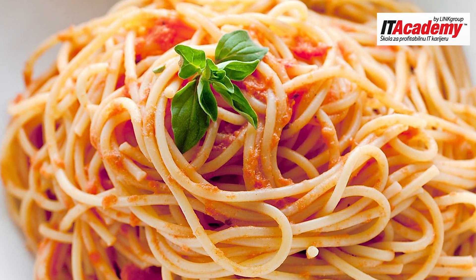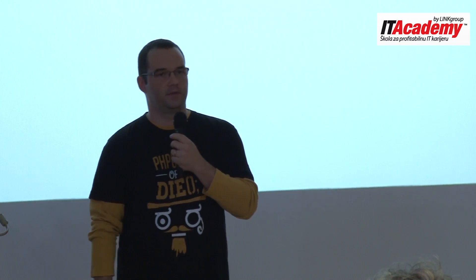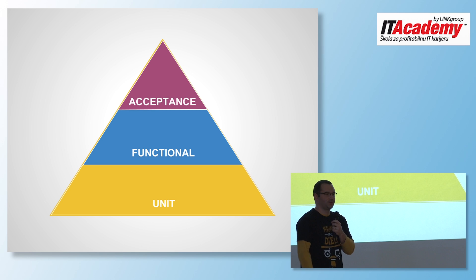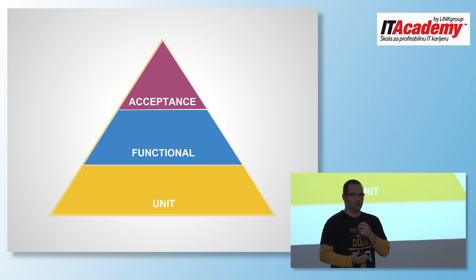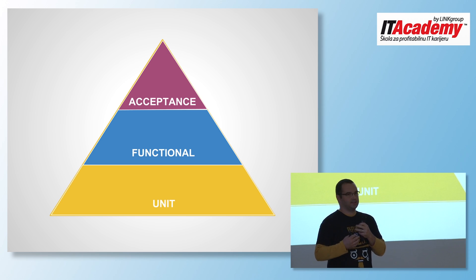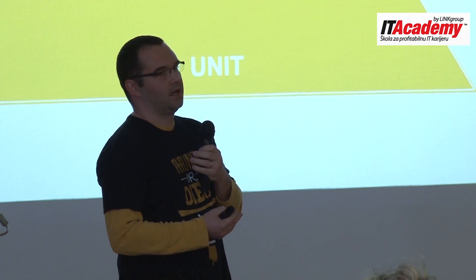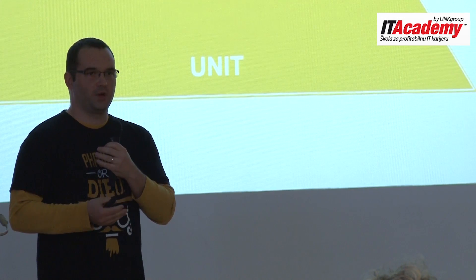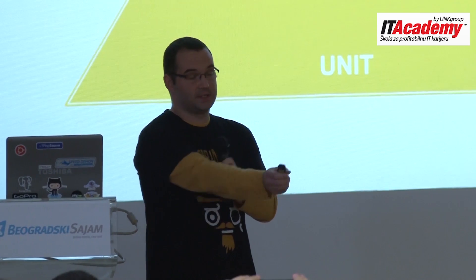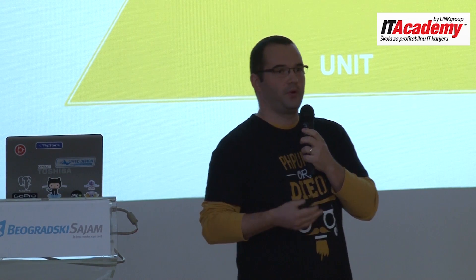I opened my project and started reading about how all these things work. One pattern emerged from all the articles I'd been reading: the testing pyramid. This pyramid roughly says that in an ideal project you should have a lot of unit tests as the solid base, then fewer functional tests, and on top some acceptance tests. This is really the ideal way to organize your tests and show how many of each you should have — though the real world is slightly different.